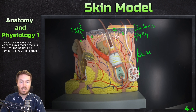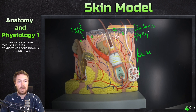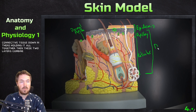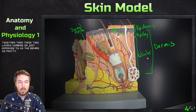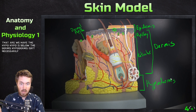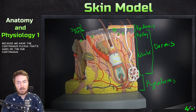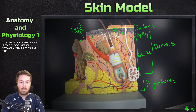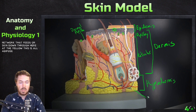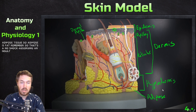Below the papillary layer is the reticular layer — more of a dense connective tissue with collagen and elastin fibers holding everything together. These two layers combined are referred to as the dermis. Below all that we have the hypodermis — 'hypo' meaning below the dermis. The hypodermis includes the subcutaneous plexus, which is the blood vessel network that feeds the skin, and is mostly adipose tissue — fat — providing shock absorption and insulation.